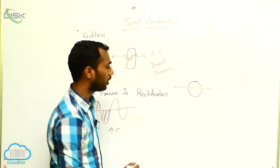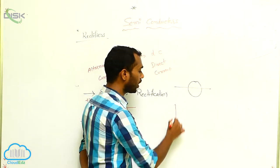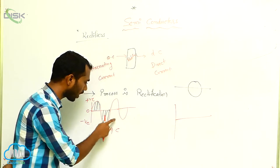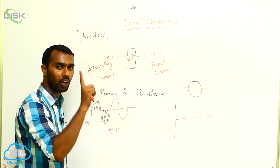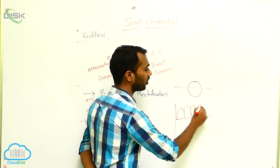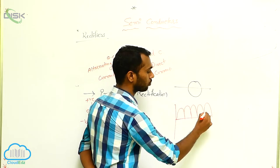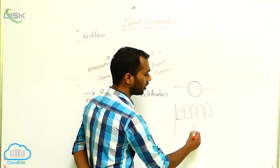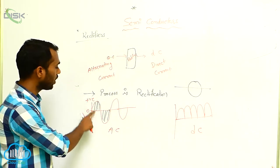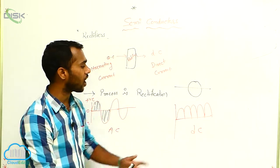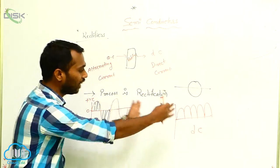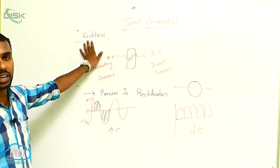What is direct current? Direct current has only one direction. Which direction — positive or negative? Only one direction, and that is the positive direction. This is DC current. AC has two directions, but DC has only one direction. To convert AC into DC, we require a rectifier.